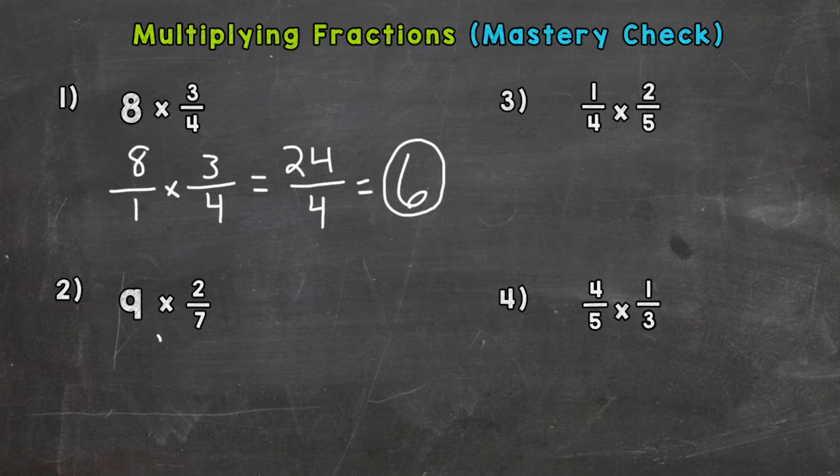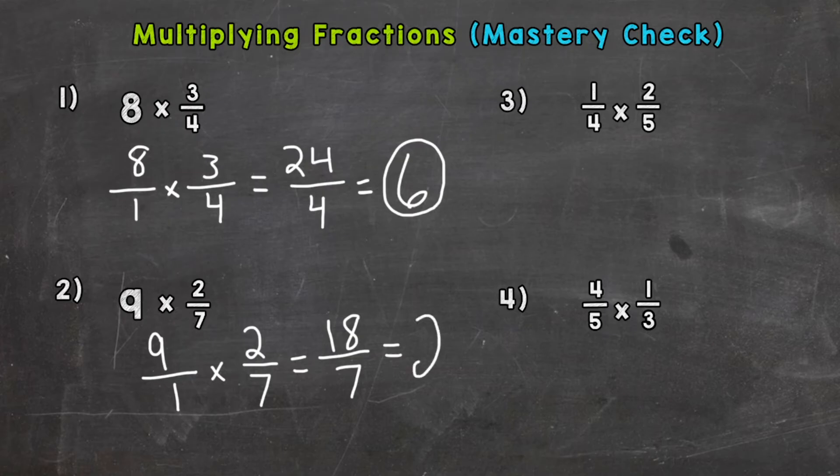Number 2, we need to put the whole number over 1 and multiply by 2/7. 9 times 2 is 18, 1 times 7 is 7. Again, we have an improper fraction so we need to divide 18 by 7. How many whole groups of 7 can we pull out of 18? The answer to that is 2. Then we have 4 left over and keep the denominator the same which is 7. So 2 and 4/7.